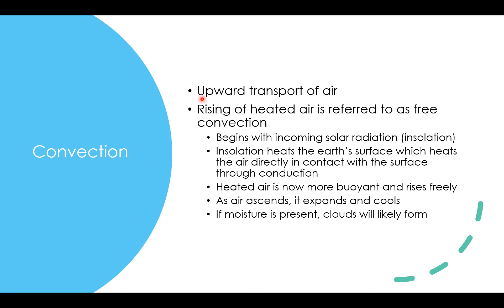Convection is the upward transport of air — the rising of heated air, referred to as free convection. Think about a hot summer day with the sun out fairly intense. Incoming solar radiation, also known by the acronym insolation, heats the air surface, which then heats the overlying air directly in contact with that surface through the process of conduction. Air is a poor conductor of heat, so through the process of heating the surface, the heated layer is going to be very thin and relatively close to the surface.